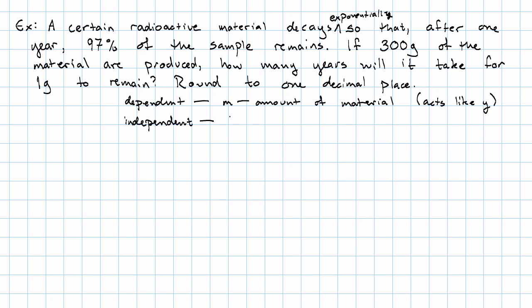Our dependent variable is going to be m, the amount of the material, that will act like y. Our independent variable will be t, the time in years. That's going to act like x. Notice it says 97% of the sample, so 97% of the material. That 97% is going to give us our multiplier. We start with 300 grams. We want to end with 1 gram. Our multiplier is 0.97. And we don't know our t. Our equation is going to be 1 equals 300 times 0.97 to the t.